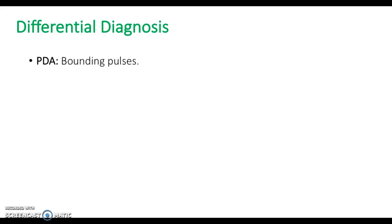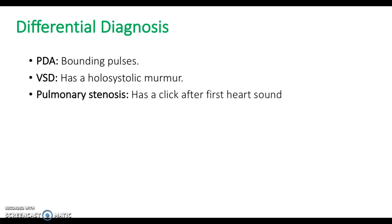Differential diagnosis. Patent ductus arteriosus — the patient will normally have a bounding pulse, which is really strong and powerful, feeling as though the heart is pounding or racing. Ventricular septal defects normally have a harsh systolic murmur — a high-pitched heart sound continuing from the first to the second heart sound. Pulmonary stenosis normally has a click after the first heart sound. Right bundle branch block can be distinguished using an ECG.